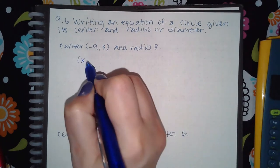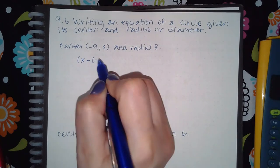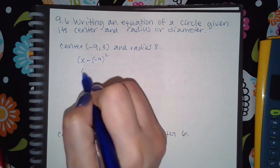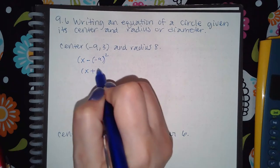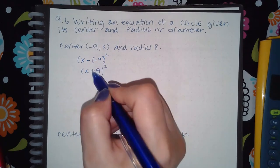x minus negative 9, or you can just use the opposite. What is the opposite of negative 9? It is positive 9. I'm going to still get a positive 9.